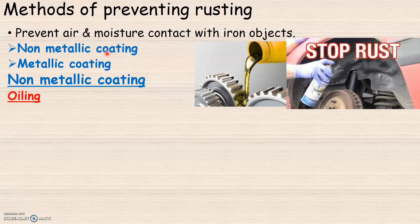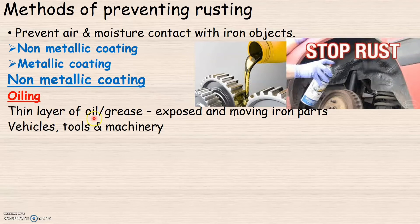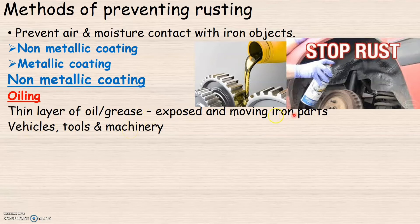The first non-metallic coating method is oiling. In this method, a thin layer of oil or grease is applied on the surface of iron objects so that it will prevent the surface of iron from getting rusted. This method is especially done for exposed and moving parts of iron used in vehicles, tools, and machinery.